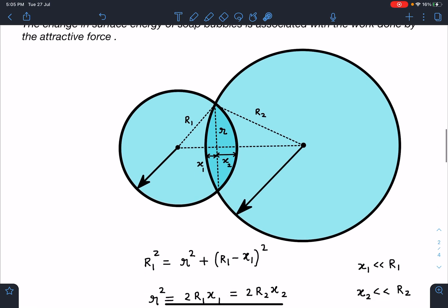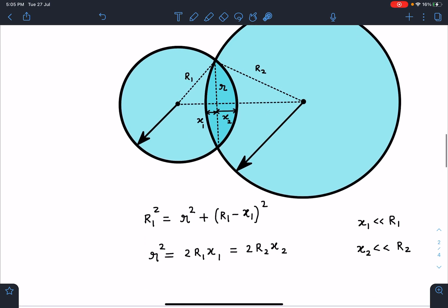Now in any one of the circles, you can apply Pythagoras theorem. You can say this is R1, and this radius is small r, and this is going to be R1 minus x1. So if we simplify this, we get r² equals 2R1x1. The same process we can do for the second one, and we will get r² equals 2R2x2. As I have initially mentioned, both x1 and x2 are extremely small distances, so x1 is very very small compared to R1, and x2 is very very small compared to R2.